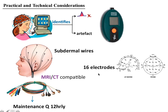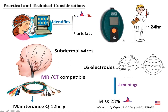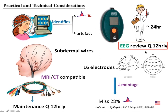An EEG technician should be present 24 hours a day, and the continuous EEG must be reviewed by a competent neurologist or trained person every 12 hours — at least twice daily. Interpretation by a qualified person at least twice a day is essential while the patient is on continuous EEG monitoring.